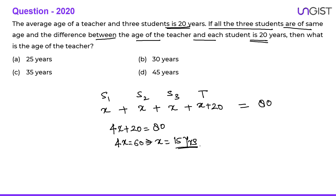The age of one student is 15 years. So the age of the teacher will be x plus 20, which is 35 years. The age of the teacher is 35 years, and option C is the correct choice.